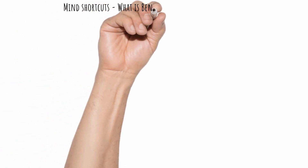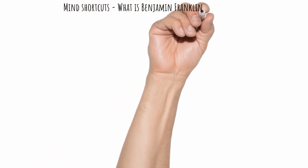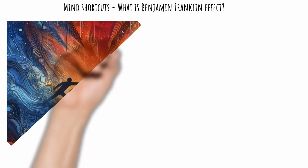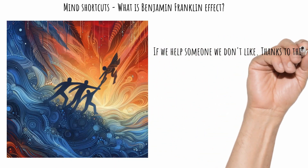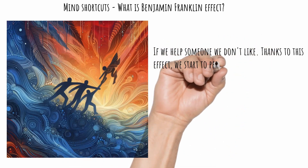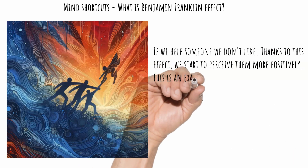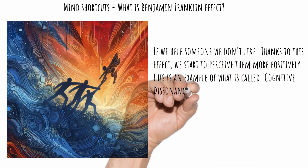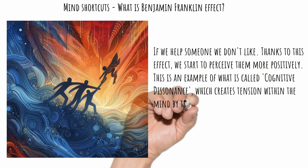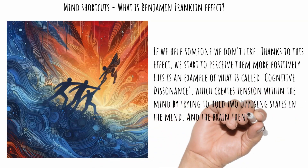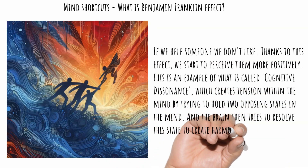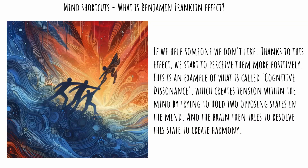Mind shortcuts: what is the Benjamin Franklin effect? If we help someone we don't like, thanks to this effect we start to perceive them more positively. This is an example of what is called cognitive dissonance, which creates tension within the mind by trying to hold two opposing states. The brain then tries to resolve this state to create harmony.